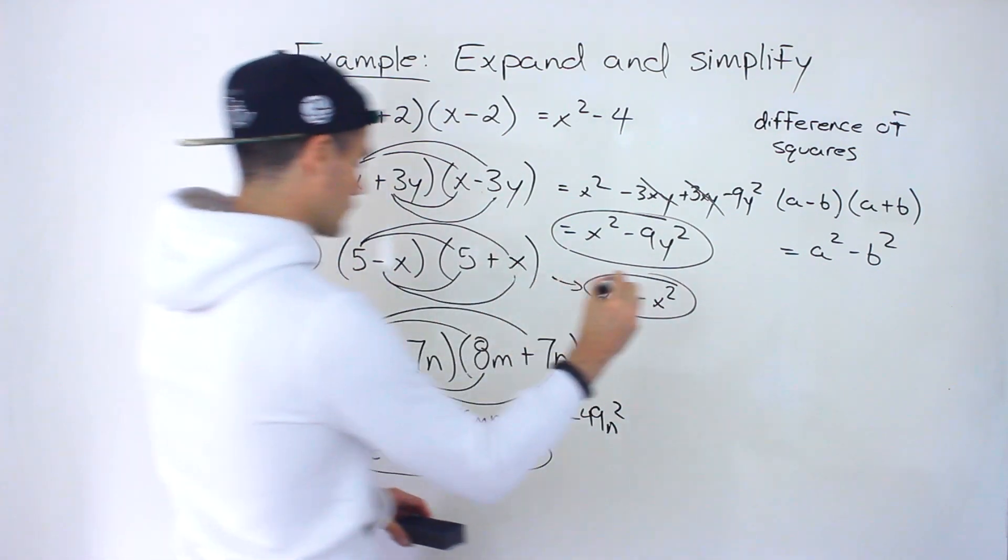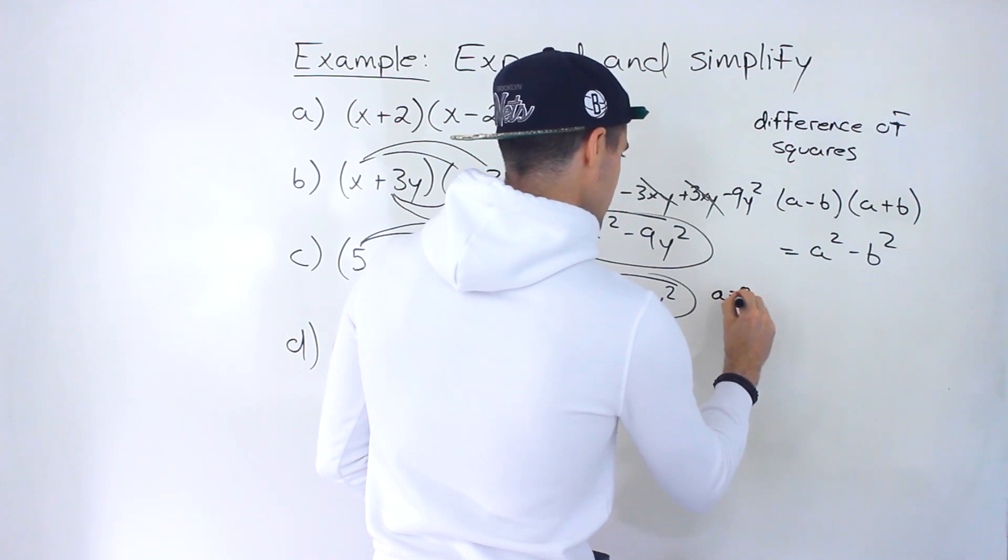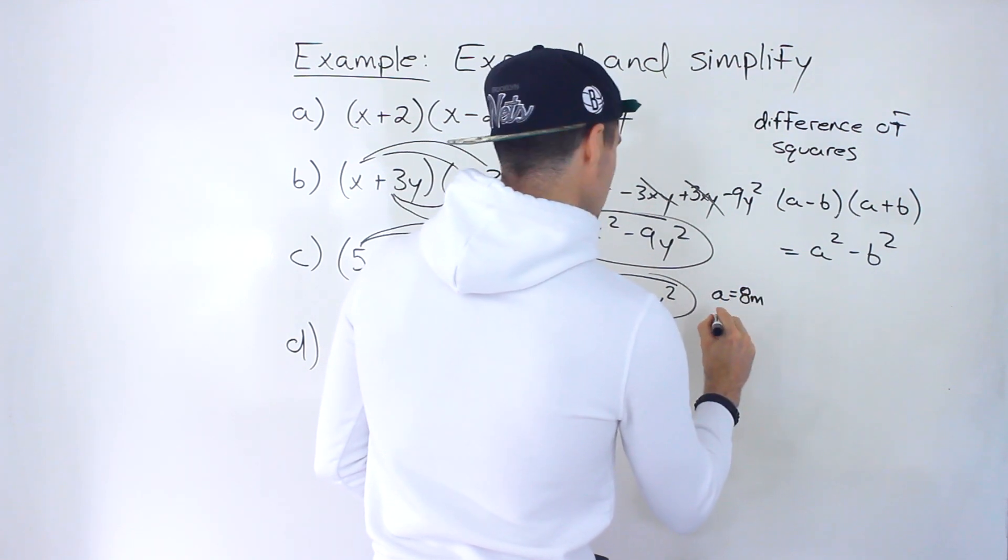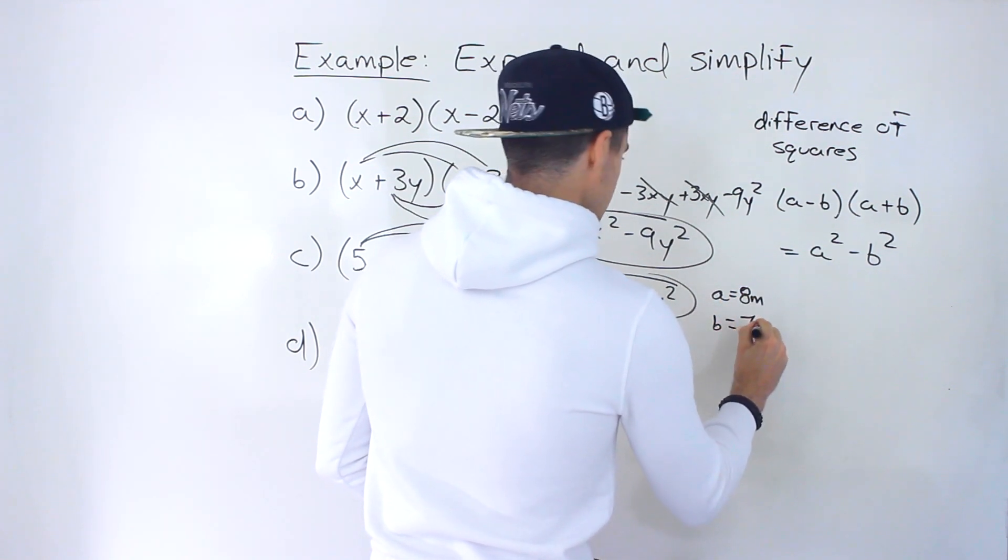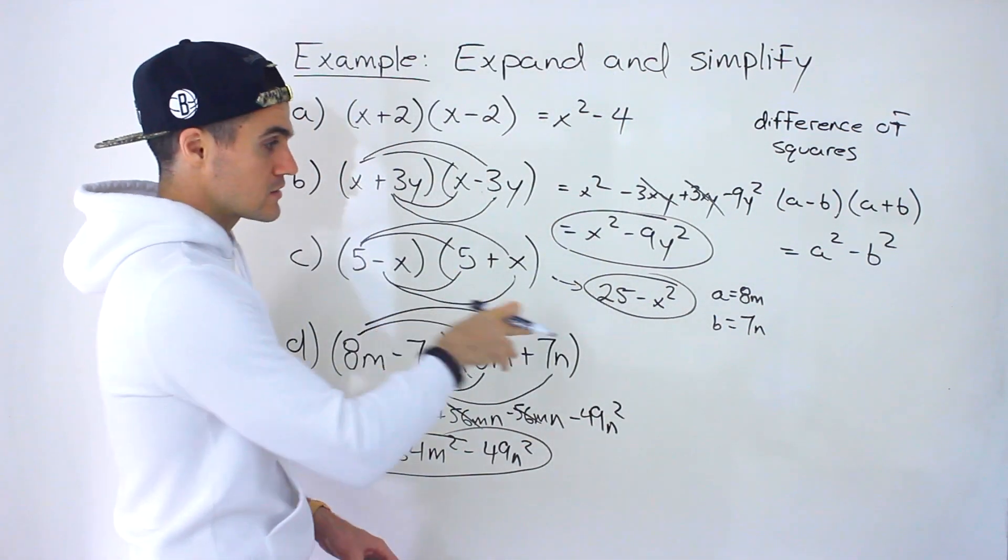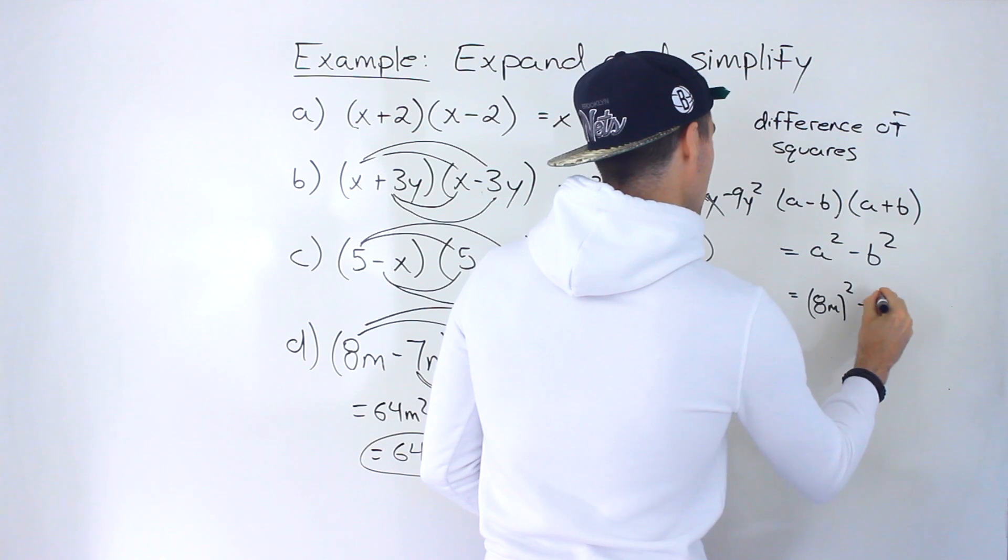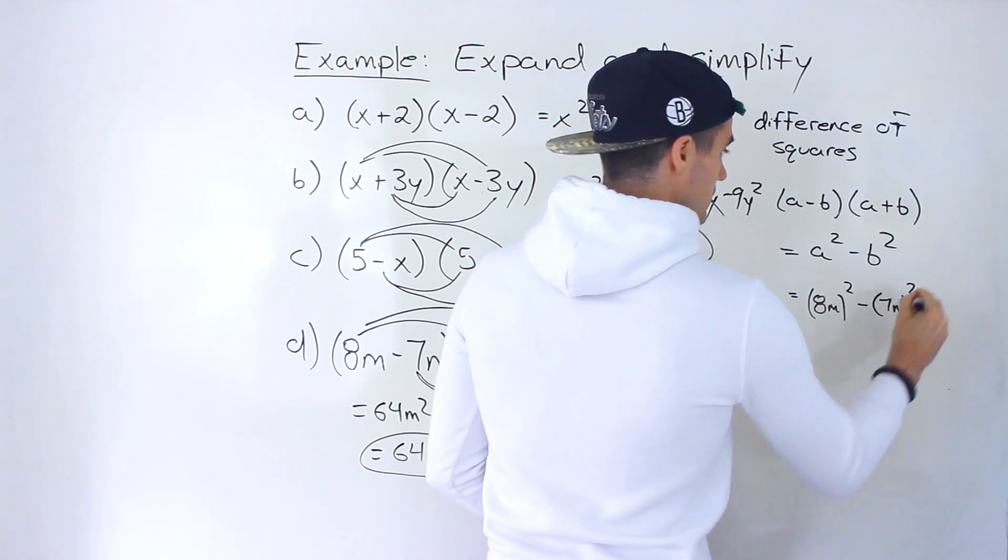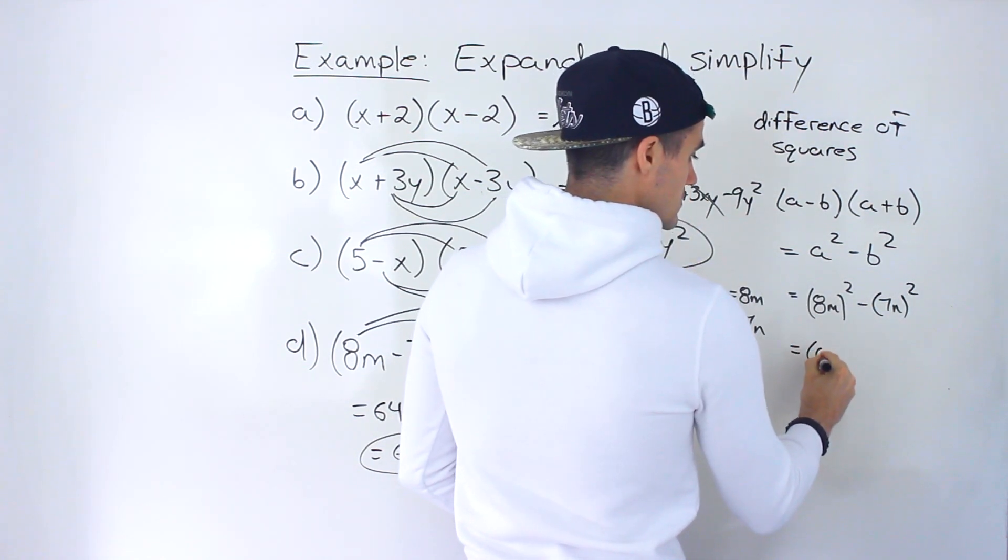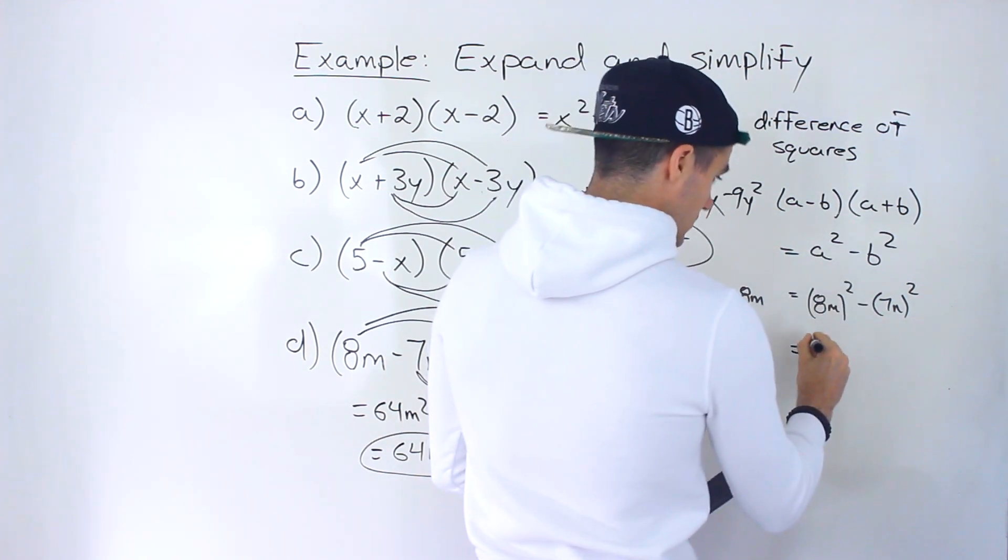And then if we take this, plug it into the formula, notice in this case, the a value is 8m. And then the b value is 7n. So then taking those respective values for the a and the b, plugging it in here, we'd end up with 8m squared minus 7n squared like that.